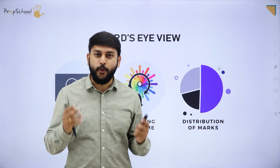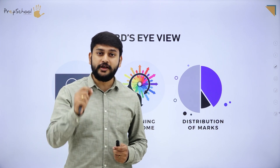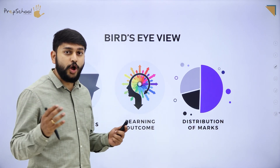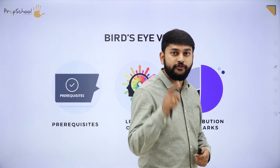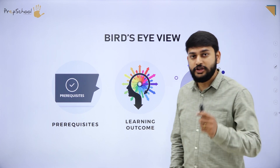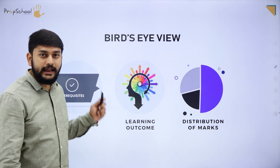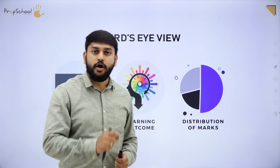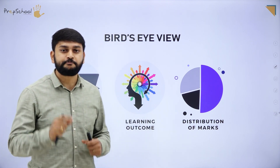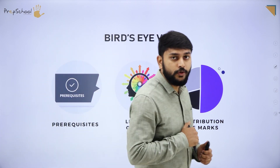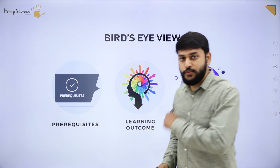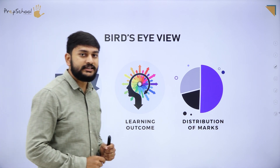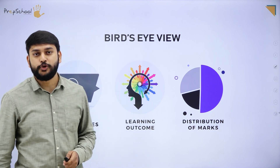The first one is prerequisites — the prior knowledge before we start this subject. What topics you should remember or recollect from class 11 is what I will call prerequisites. The second one is learning outcome — once you are done with this subject, what have you gained. The third one is marks distribution — how your marks are distributed.